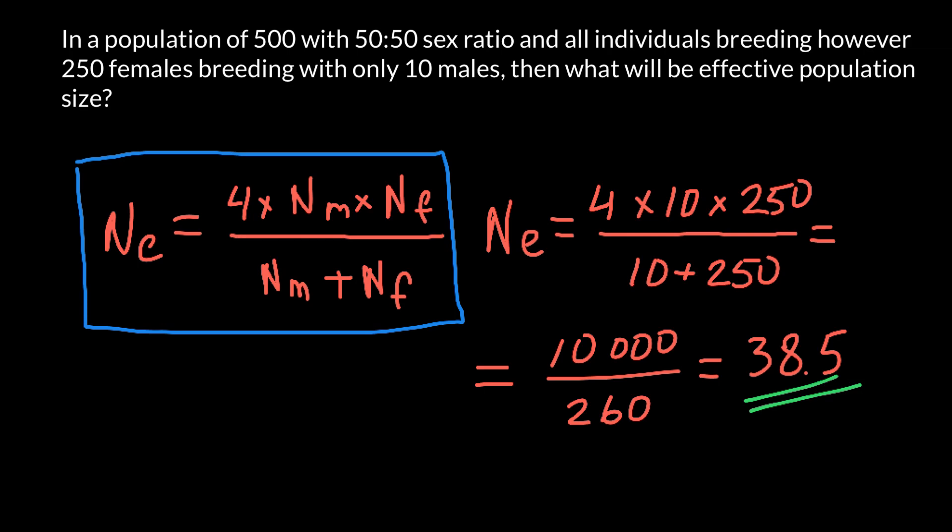Though we have here 500 animals, actually, effective population size would be 38.5 animals.